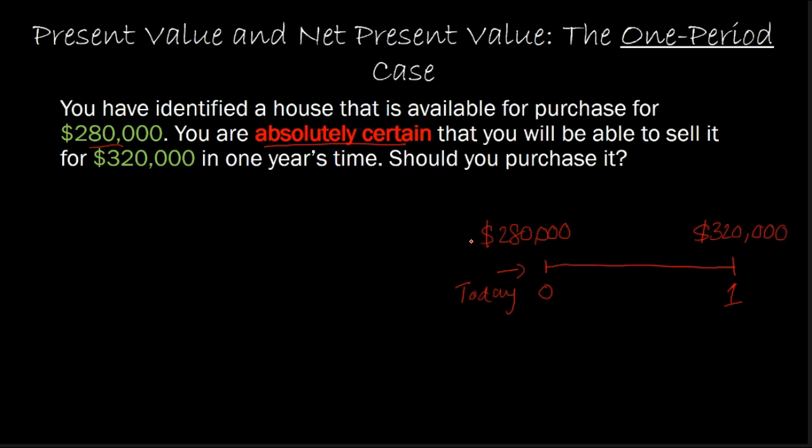I'm going to represent this $280,000 using a negative sign where this negative represents that money is going to be going out of your pocket. So this is called the cash outflow, and this is the cash inflow that you're expecting one year from now.